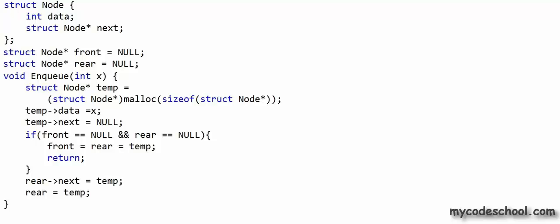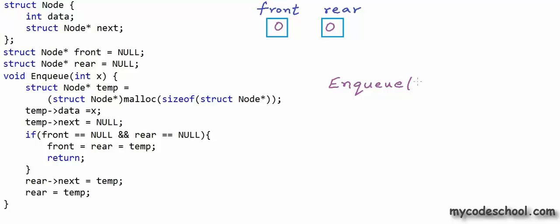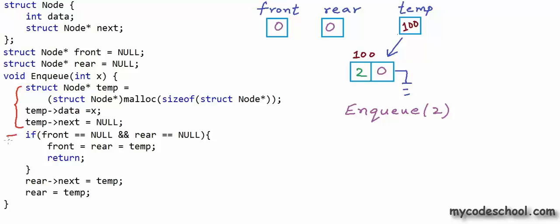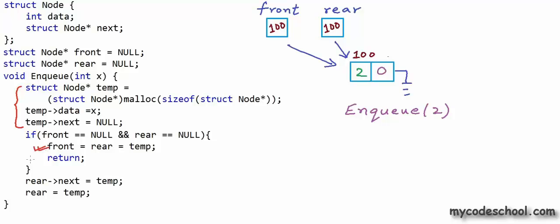Let's walk through a simulation. Initially the queue is empty, so both front and rear are null. We call enqueue passing number 2. A node is created with data 2 and address field null — say at address 100, so temp stores 100. Since front and rear are both null, we go inside the if-condition and set both front and rear to 100. When the function finishes, the local variable temp is cleared. This is how the queue looks after the first enqueue.